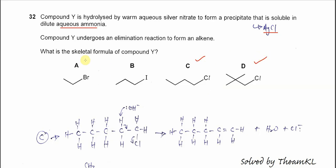It cannot be A or B, so we will not discuss those and just focus on C and D. Compound Y undergoes an elimination to form an alkene, so C or D will undergo elimination to form alkene.